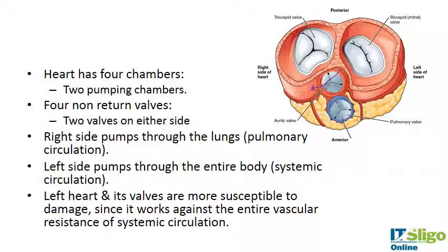Likewise, when blood comes back into the pulmonary vein it cannot flow backwards. We have an aortic valve, a pulmonary valve, a bicuspid or mitral valve which only has two leaflets, and a tricuspid valve which has three leaflets. The right side of the heart pumps through the lungs — the pulmonary circulation — and the left side pumps through the entire body, which is the systemic circulation.